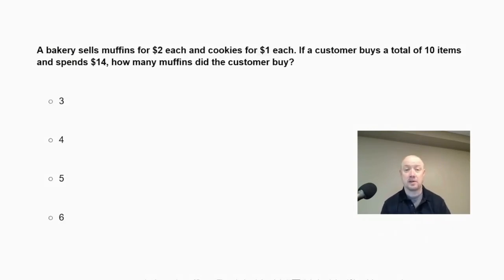A bakery sells muffins for $2 each and cookies for $1 each. If a customer buys a total of 10 items and spends $14, how many muffins did the customer buy? In order to do this problem, we are going to set up some variables for muffins and cookies and use a system of equations to solve this. We're going to let m equal the number of muffins and c equal the number of cookies. When solving a system of equations, if we have two unknowns, we're going to need two equations.